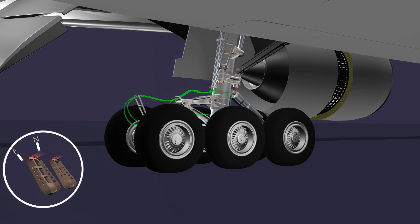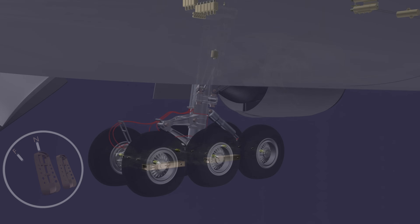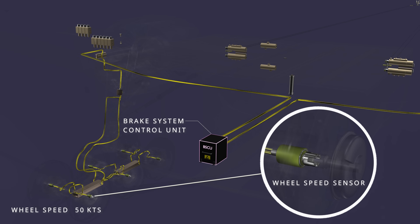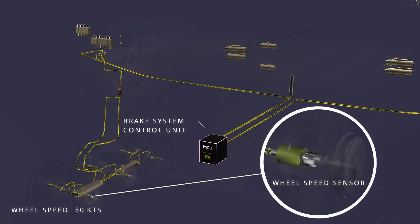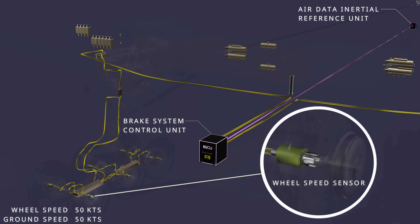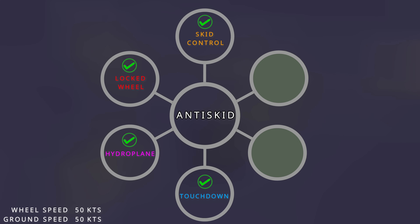The anti-skid system automatically controls the brake pressure and plays a crucial role during the landing phase. However, the anti-skid operation changes as the aircraft slows down and skidding conditions are no longer a serious threat. The brake system control unit receives wheel speed sensor signals from the 12 main landing gear wheels, as well as ground speed data from the inertial reference system. The brake computer uses this data to control the anti-skid functions.